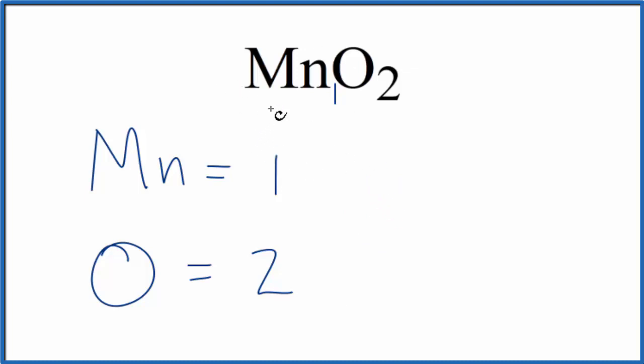So if we have one mole of MnO2, we know we have one manganese atom. We'll multiply that by Avogadro's number, 6.02 times 10 to the 23rd, and that tells us how many manganese atoms we have in one mole of MnO2.